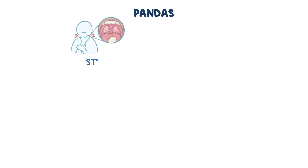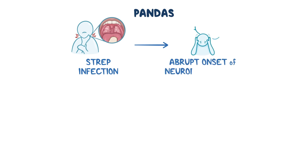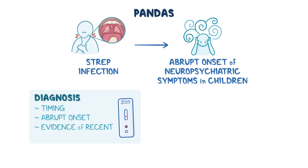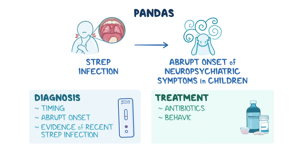As a quick recap: PANDAS is a condition where a strep infection triggers an abrupt onset of neuropsychiatric symptoms in children. Diagnosis is based on the timing and abrupt onset of the symptoms, along with evidence of a recent strep infection. Treatment may involve antibiotics, behavioral therapy, and medications to manage the symptoms.